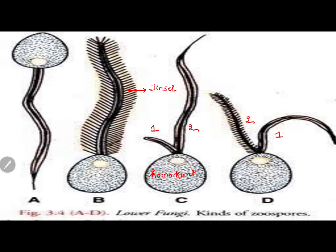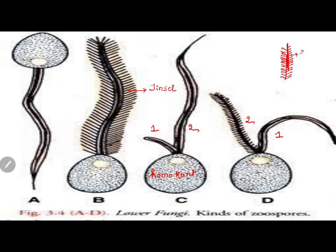Tinsel means a kind of bottle brush. You know how we clean a bottle with a brush — it has a central metal axis and on either side we have bristles so that you can insert the brush inside the bottle and clean it. Tinsel flagella are also like that, where I have the flagella axis but on one side or either side I see small hair-like structures. If it looks like a bottle brush with small hair-like structures, I call it tinsel.